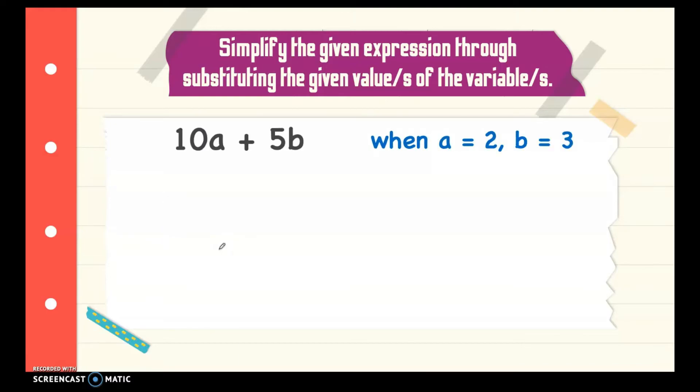Next, we have 10a plus 5b when a is equal to 2 and b is equal to 3. Here we have two variables. Whatever is the value of a, you substitute here in a and for the b, substitute here in 5b. We have 10 then multiplied it to the value of a is 2 plus 5 and then the value of b is 3.